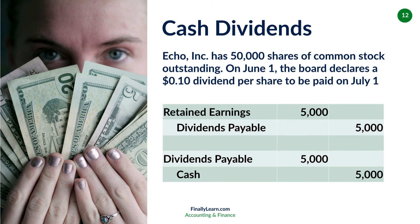Let's start with cash dividends. Echo has 50,000 shares of common stock outstanding — outstanding is the ownership, that's where we pay dividends, those are the shares that get to vote. On June 1, the board declares a $0.10 dividend per share to be paid on July 1st. Every share outstanding is going to receive $0.10. So 50,000 shares times $0.10 gives us $5,000. We're going to debit retained earnings $5,000 and credit dividends payable $5,000. That is the entry on June 1st — the date of declaration. Dividends payable is a liability.